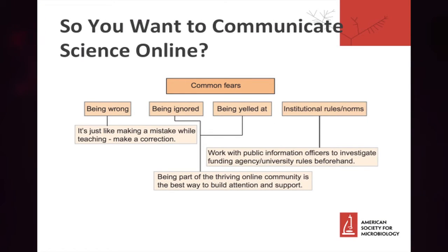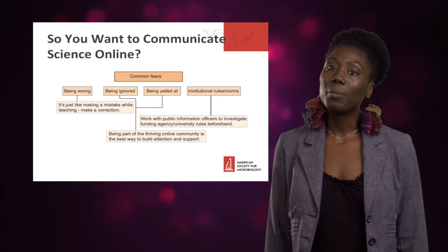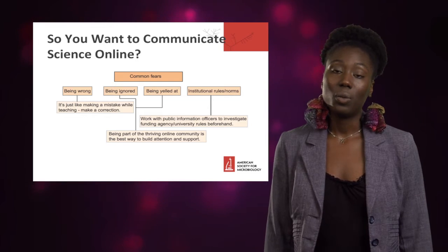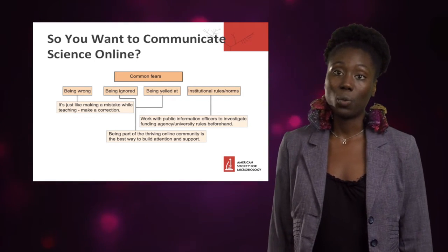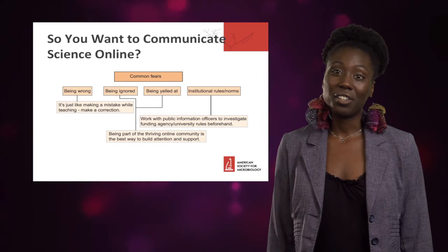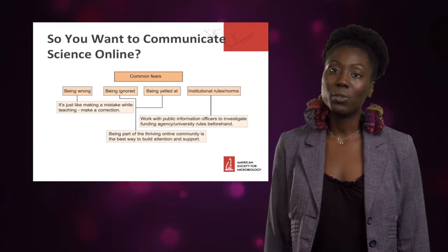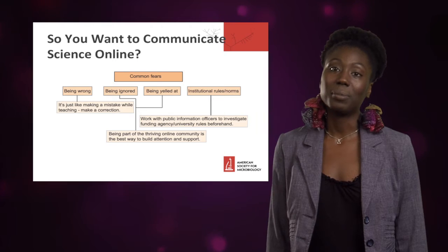Being wrong — it's okay to be wrong. Just be honest about it. Be completely transparent any time you make a mistake, and people will appreciate it. Being ignored — the more you engage online, the more of an audience you develop, so the less likely you are to be ignored. You might also be afraid about being misunderstood. When communicating science, we're using a lot of technical terms and scientific wording. Janet is going to talk to you about dropping the jargon and help you get ready to communicate your science to the public.